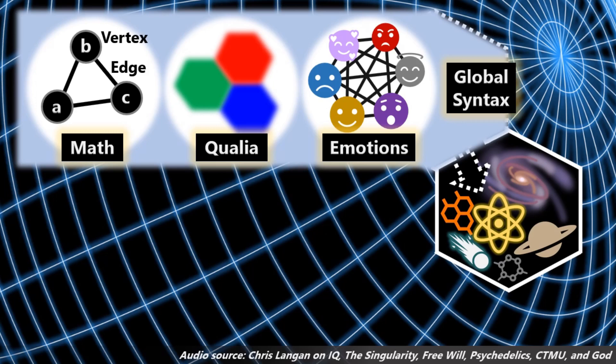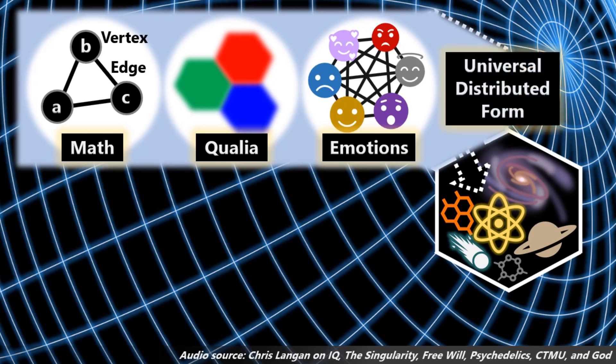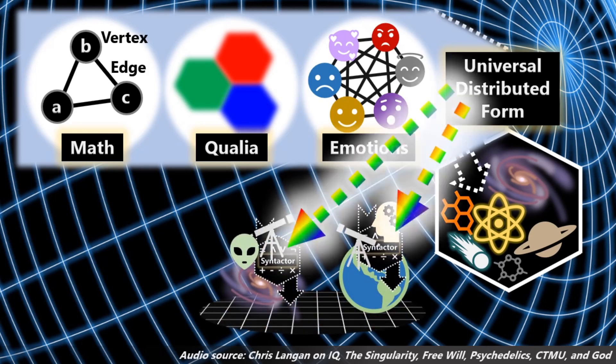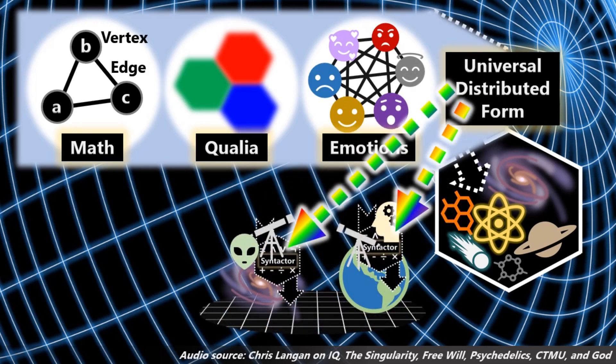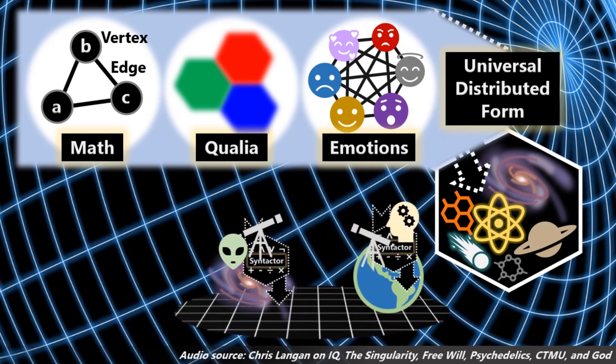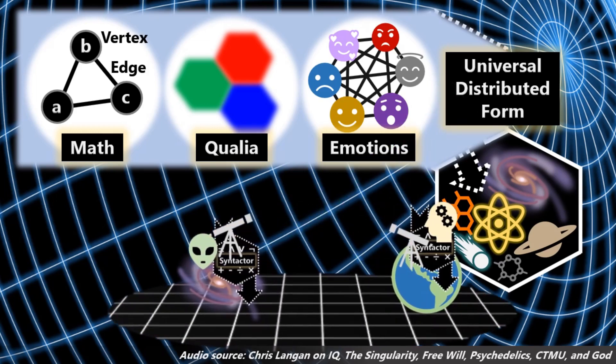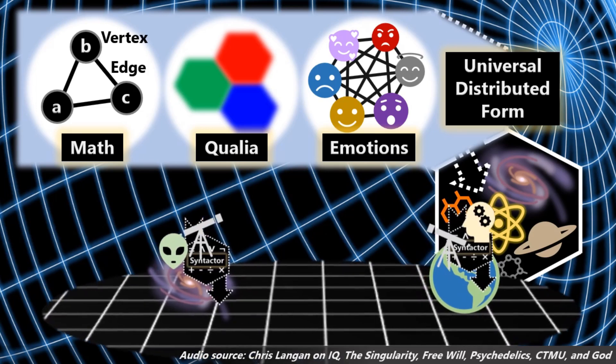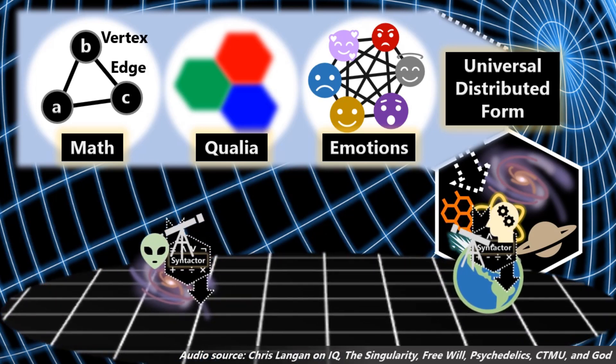In the generative universe, you've got syntax. You've got a universal distributed form that is in every syntactor. That means that every point of reality is automatically covered by the UDF or by syntax as it is created. In other words, the UDF or the universal syntax of reality is invariant with respect to rescaling. You can arbitrarily rescale reality because it's generative, because it's constantly being generated, because the universe is expanding, right? And syntax doesn't change.